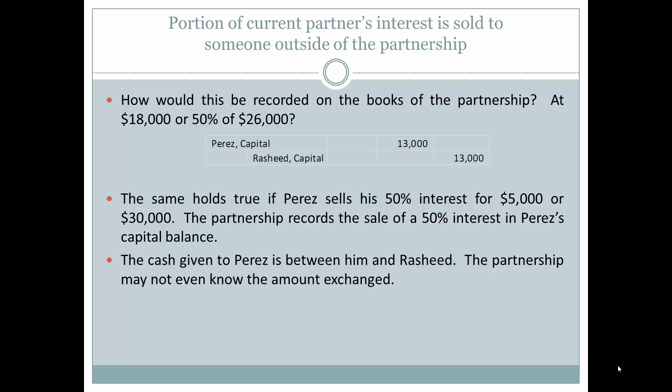This would be recorded in the books of the partnership at $13,000 — 50% of $26,000 — because that's what he sold. Perez's capital account would be debited for $13,000 to show he has 50% less of his capital balance. Rashid would now be recorded as having a capital balance of $13,000 in the partnership and would receive this portion of the partnership income.